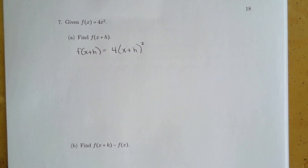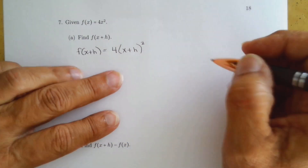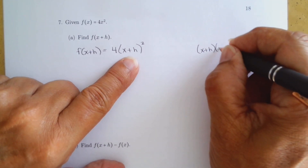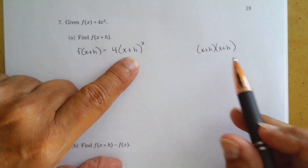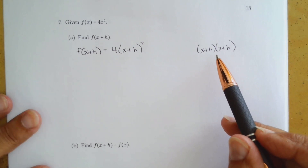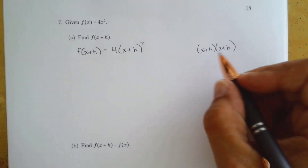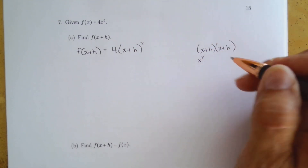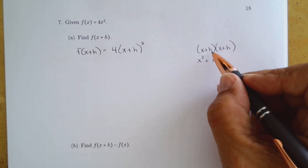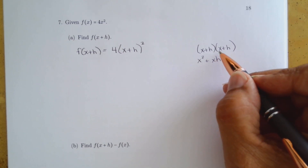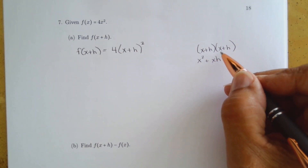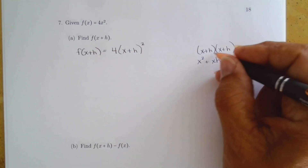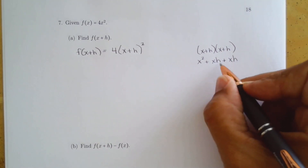We already did (x plus h) squared in section 1.1, but let's do it again. Squaring means multiplying by itself, so we FOIL (x plus h)(x plus h). First terms: x times x is x squared. Outer: x times h is xh. Inner: h times x is hx, which equals xh since multiplication is commutative. So instead of writing hx, I'll write xh again to show they're the same.